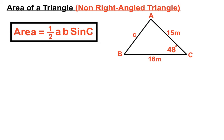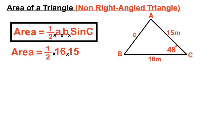Within that formula, between the half, the a, the b, and the sine c, we have invisible multiplication — so keep that in mind when entering everything into the calculator. We take the formula and substitute in the numbers from the question. Our area is equal to a half times our first side, 16, and our second side, 15.